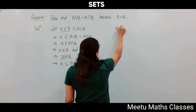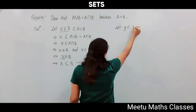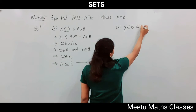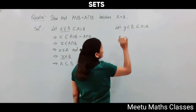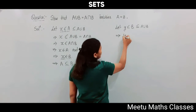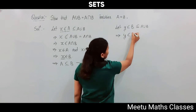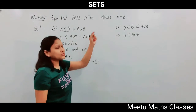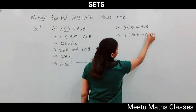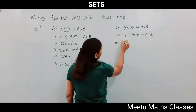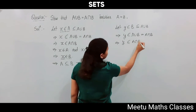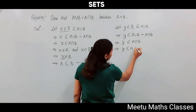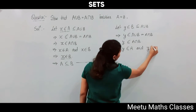Now let Y be an arbitrary element in B. Since B is a subset of A union B, Y belongs to A union B. Using the given condition that A union B equals A intersection B, this implies Y belongs to A intersection B. If an element belongs to A intersection B, that means it belongs to both A and B.